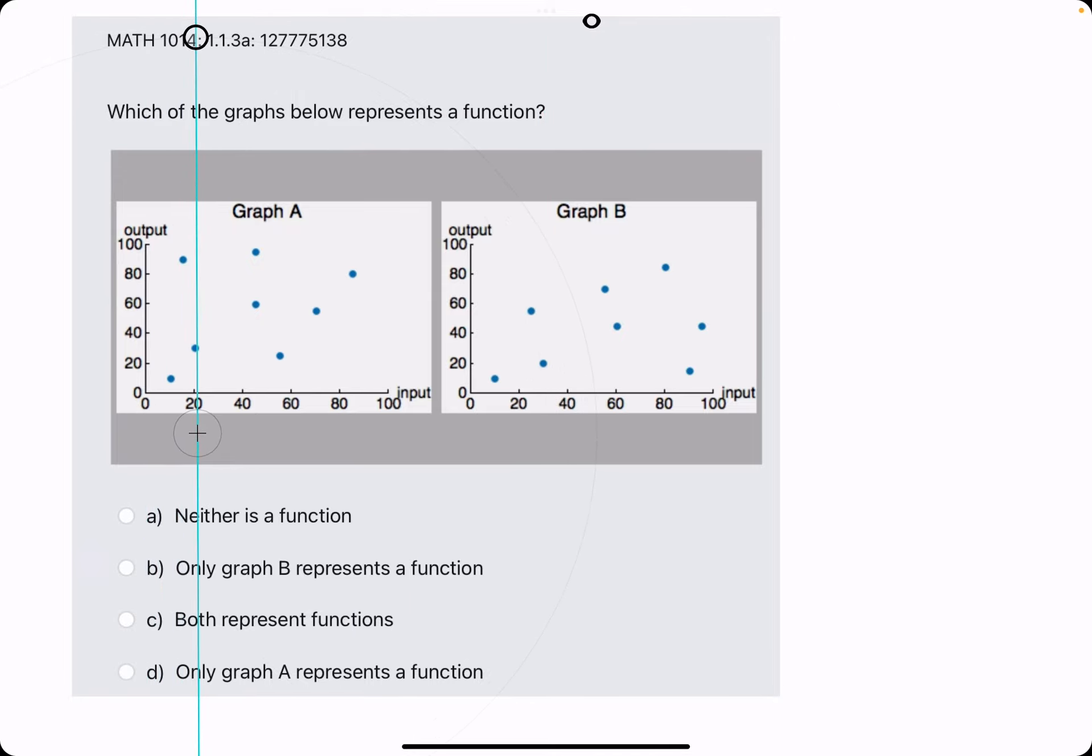One, two, three. Ah, look at that. Two points on the same vertical line. Graph A is not a function. How about graph B?